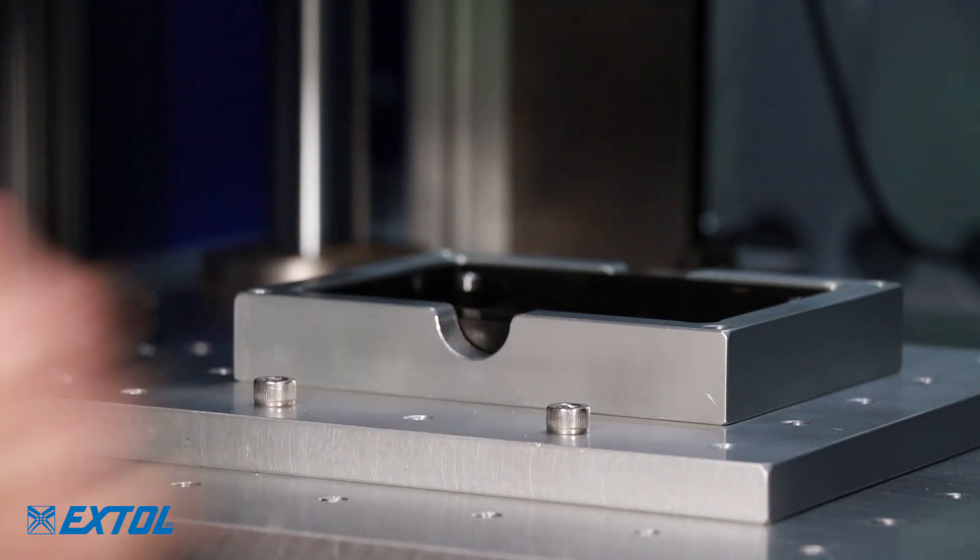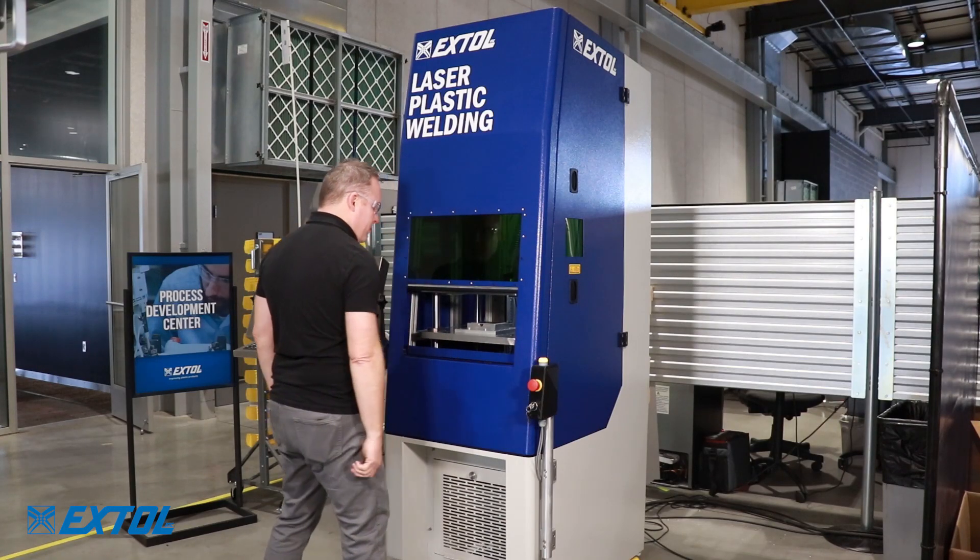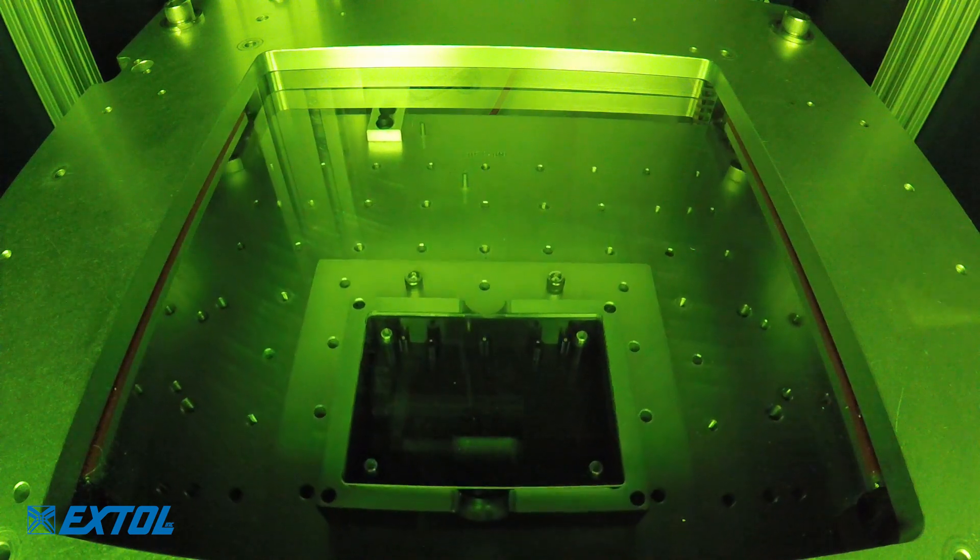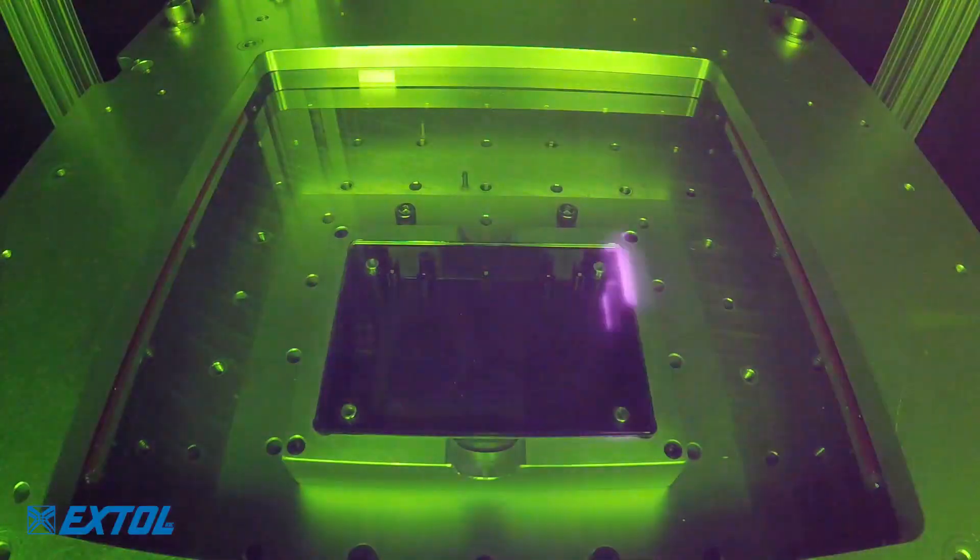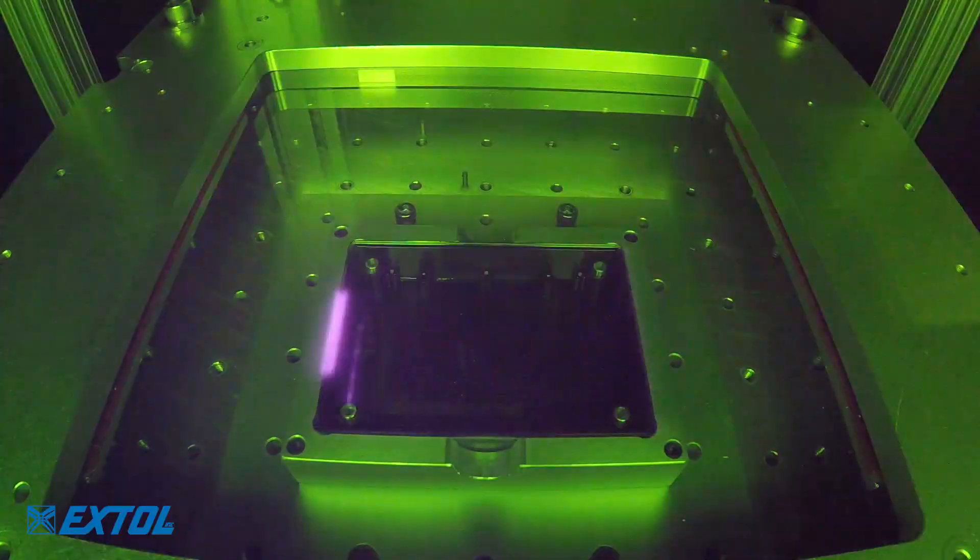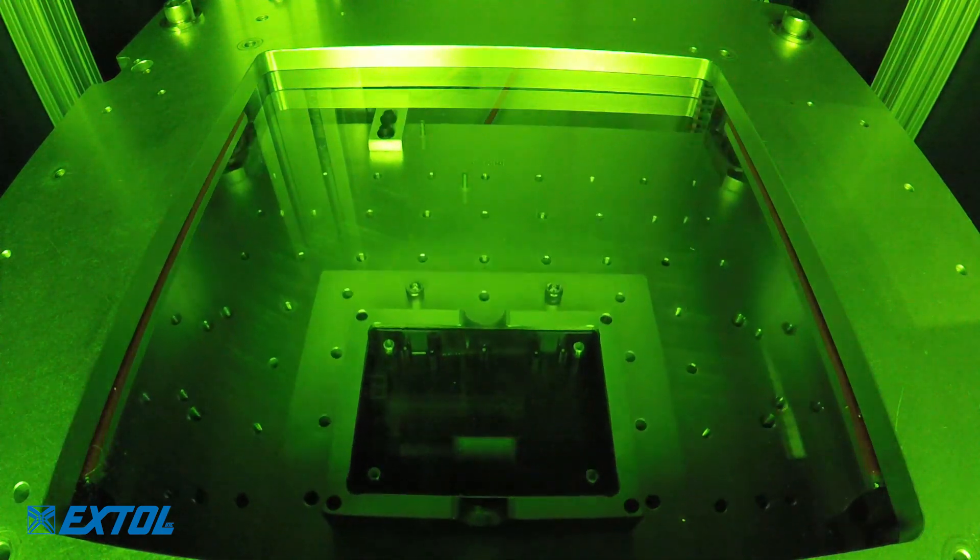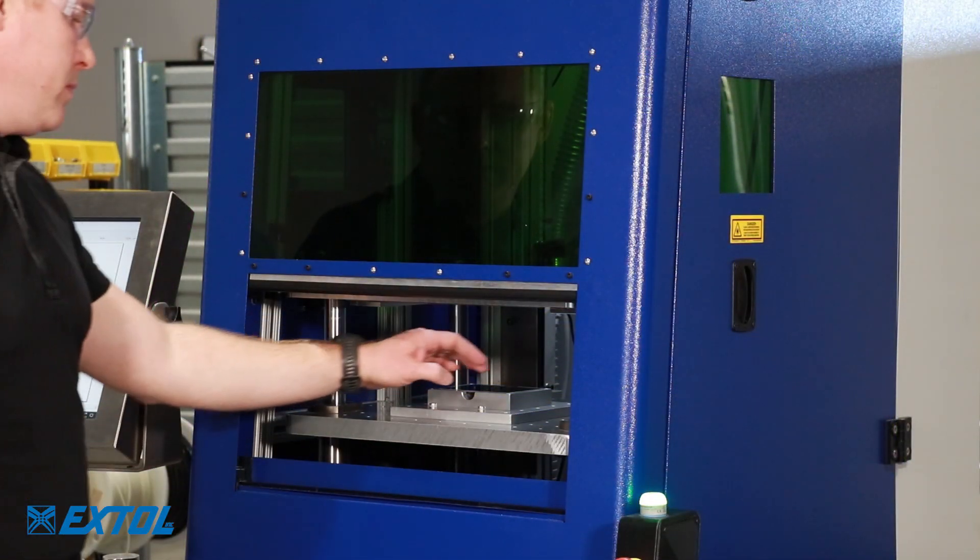Once we've optimized the process parameters, it is time to start welding. Fresh parts are loaded and the cycle is started. The press clamps the parts together and the laser beam rapidly traces the weld path at the programmed speed and power. After a brief holding period, the press retracts and we unload the welded part.